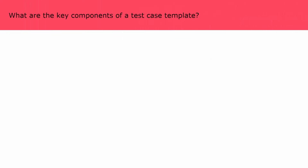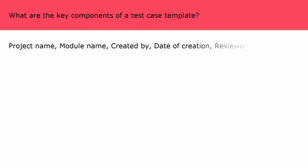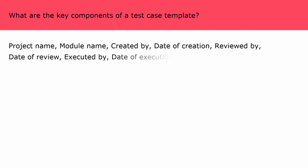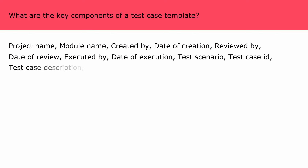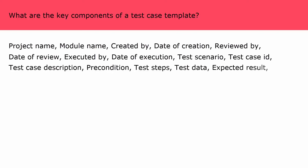What are the key components of a test case template? The key components are: project name, module name, created by, date of creation, reviewed by, date of review, executed by, date of execution, test scenario, test case ID, test case description, precondition, test steps, test data, expected result, post condition, actual result, and status of the bug.